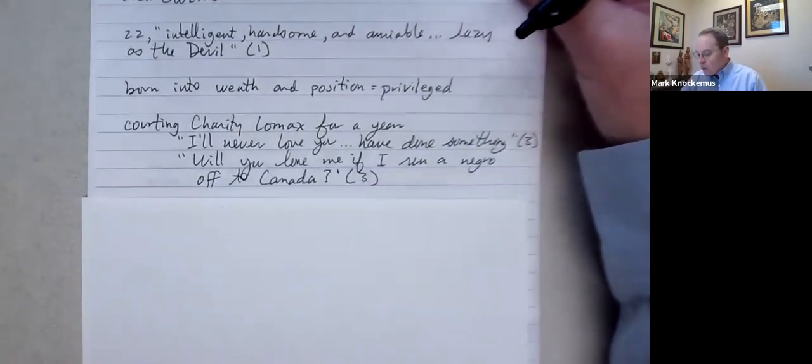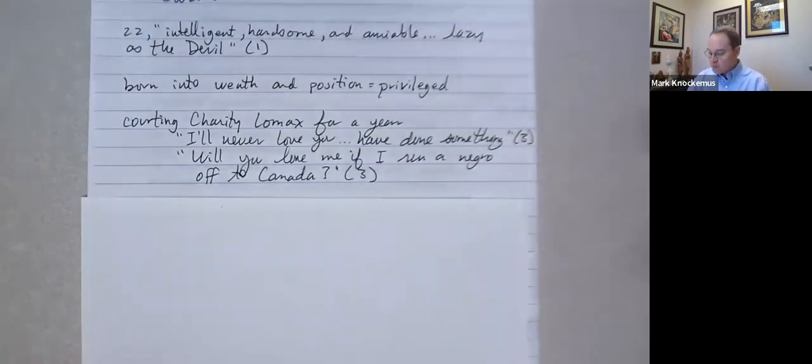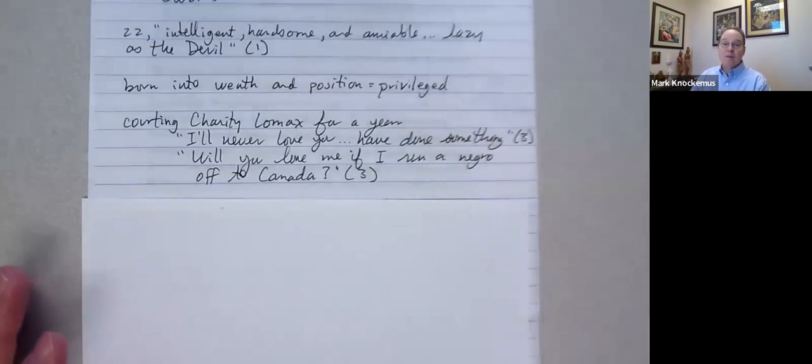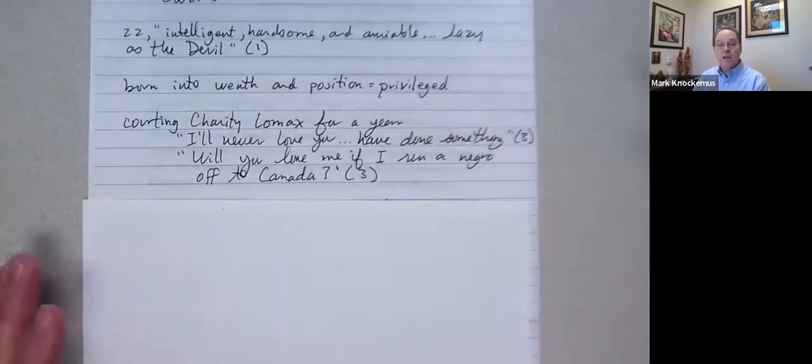Then, as we go through and we read more about Dick Owens, he's been courting Charity Lomax for a year. And this court case is like the inciting moment in their relationship. In other words, it creates a spark. So they've been talking about this court case involving the fugitive slave law. And Charity tells Dick, I'll never love you unless you have done something. So Charity recognizes that Dick is lazy as the devil and hasn't done anything and likely never will do anything. And then Dick says, will you love me if I run a Negro off to Canada? In other words, if I help one of my father's enslaved people to Canada, get that person free. Will you love me then? So this is really interesting.